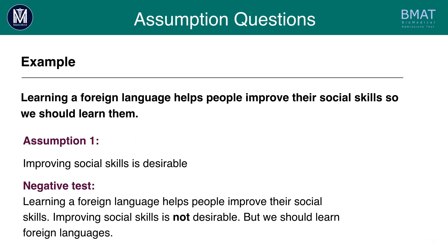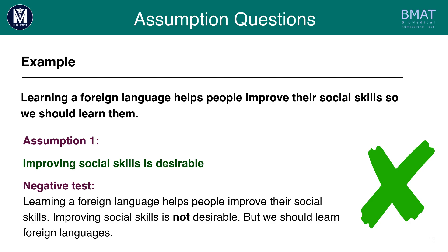Take assumption one: 'Improving social skills is desirable.' Negating it gives us: 'Learning a foreign language helps people improve their social skills. Improving social skills is not desirable. But we should learn foreign languages.' This clearly doesn't make sense — if improving social skills isn't desirable, we shouldn't learn them for that reason. The argument falls apart. The negative of the assumption destroyed the argument, meaning the original statement is an assumption. It is something that must be true for the argument to hold.